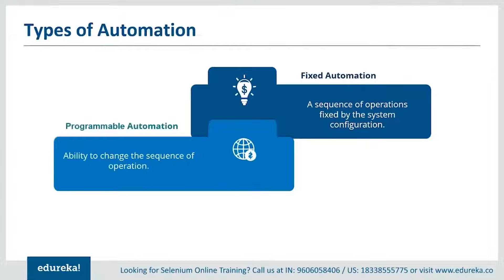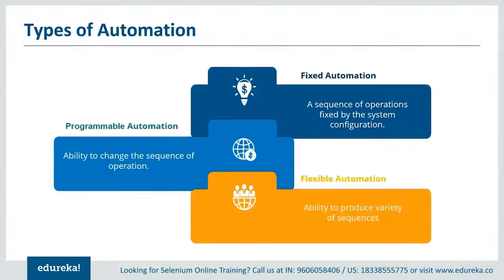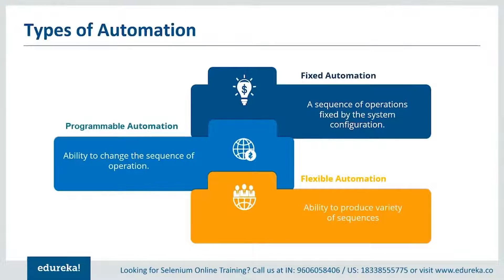Programmable automation can be used to change the sequence of any operation based on the requirements specified by the user. It provides various options to edit the sequence as per requirements. Flexible automation can inherit both fixed and programmable automation — it has the ability to produce a variety of sequences that are not just limited to one static type.